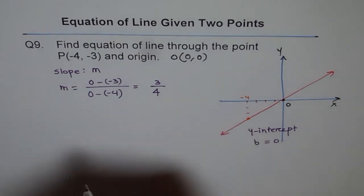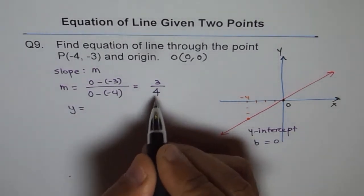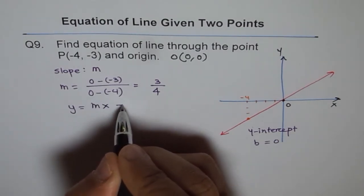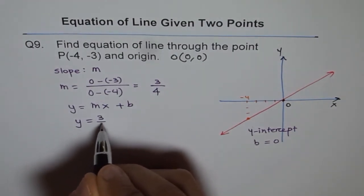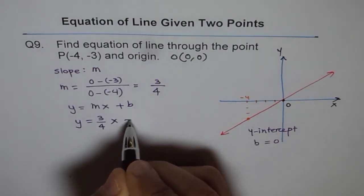Therefore, I can write my equation as Y equals MX plus B, which could be written as Y equals slope of 3 over 4, X plus B.